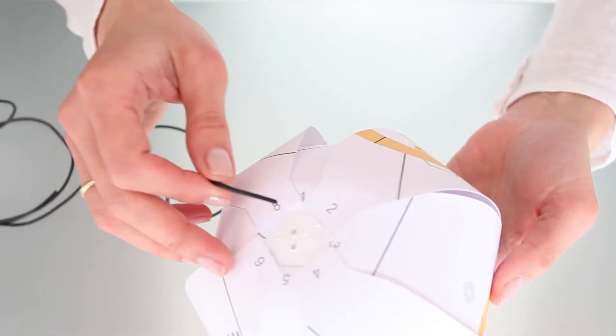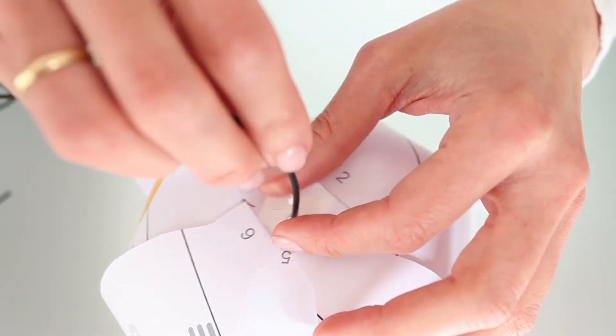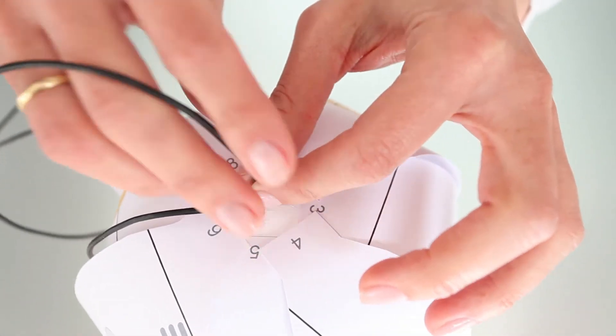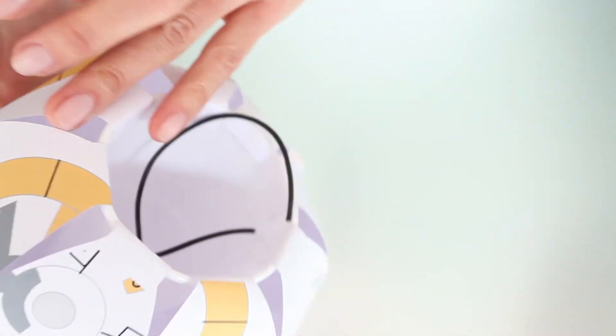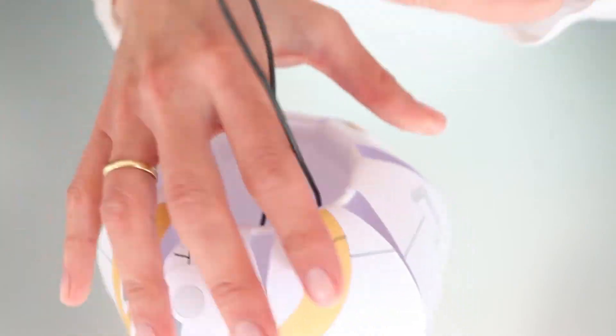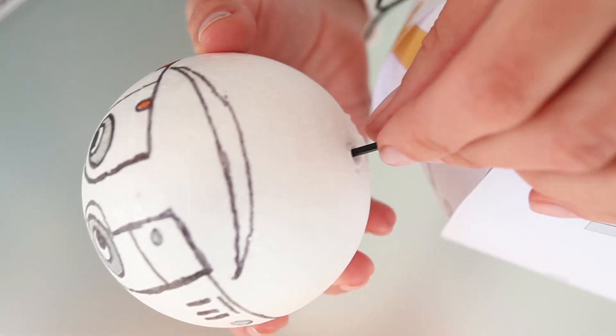Enter the leather cord through the holes made in the cup, and then through the holes in the head of the BB-8.